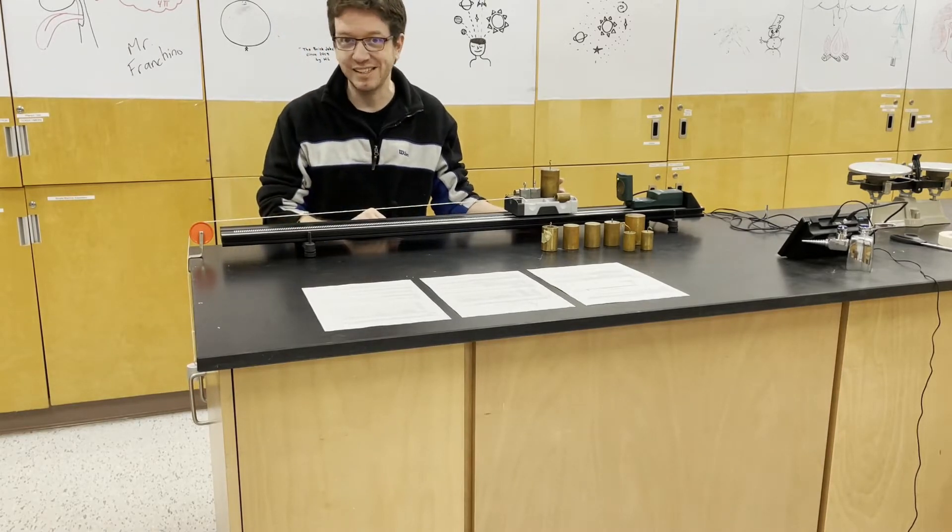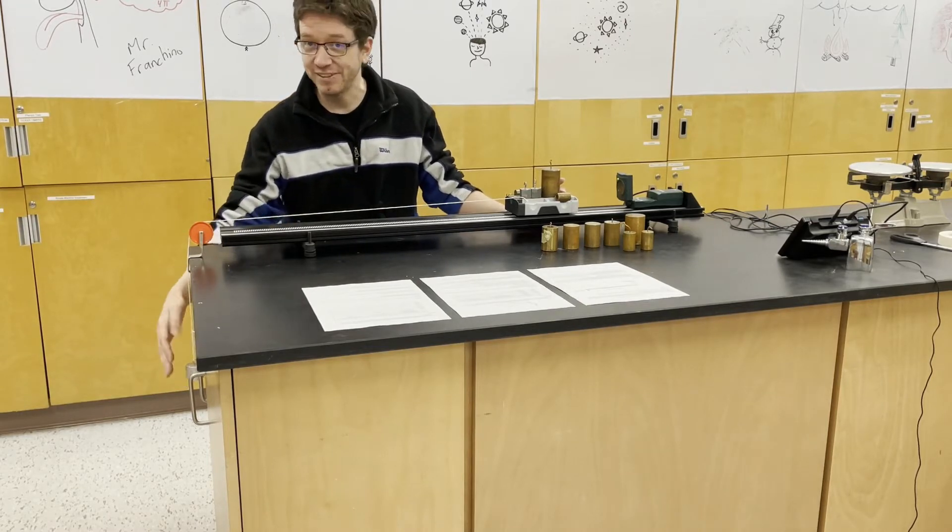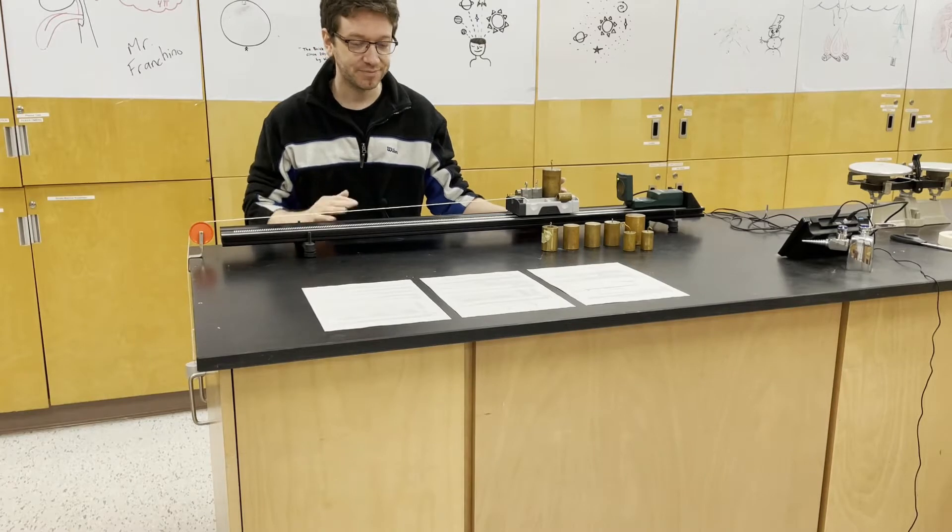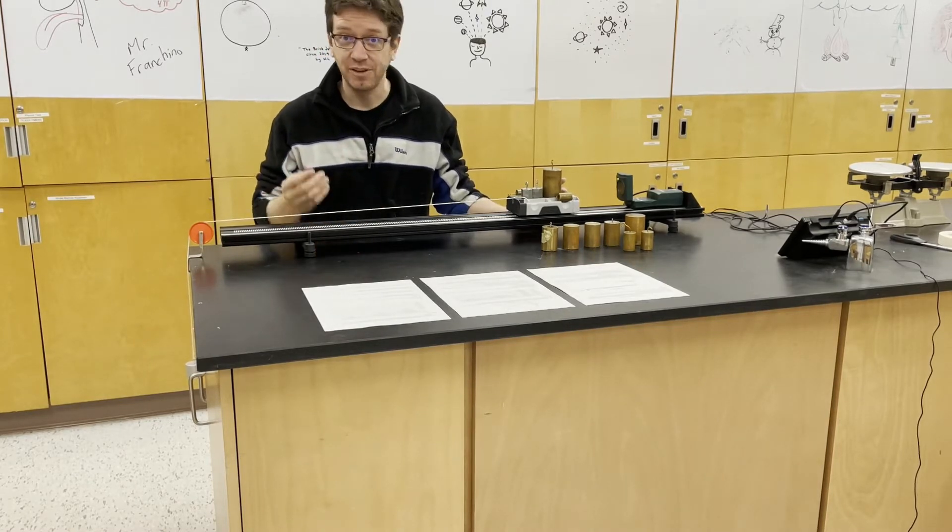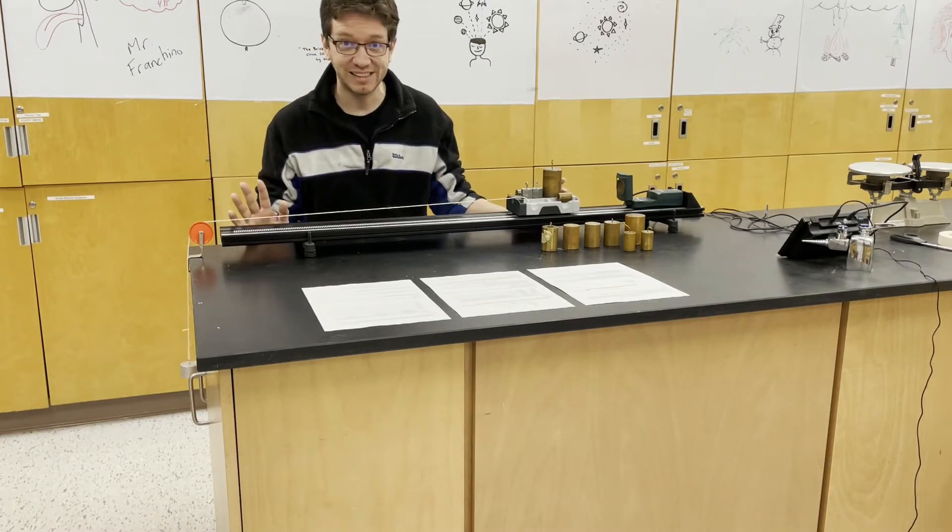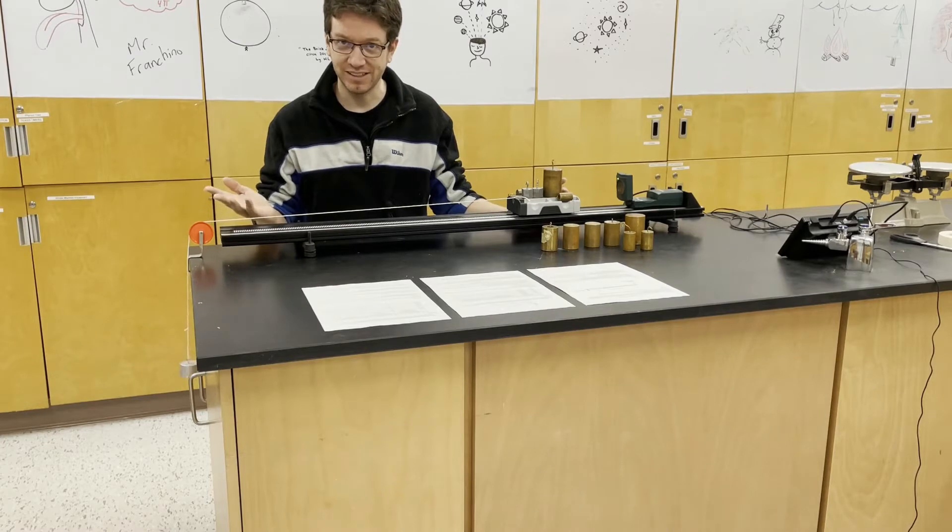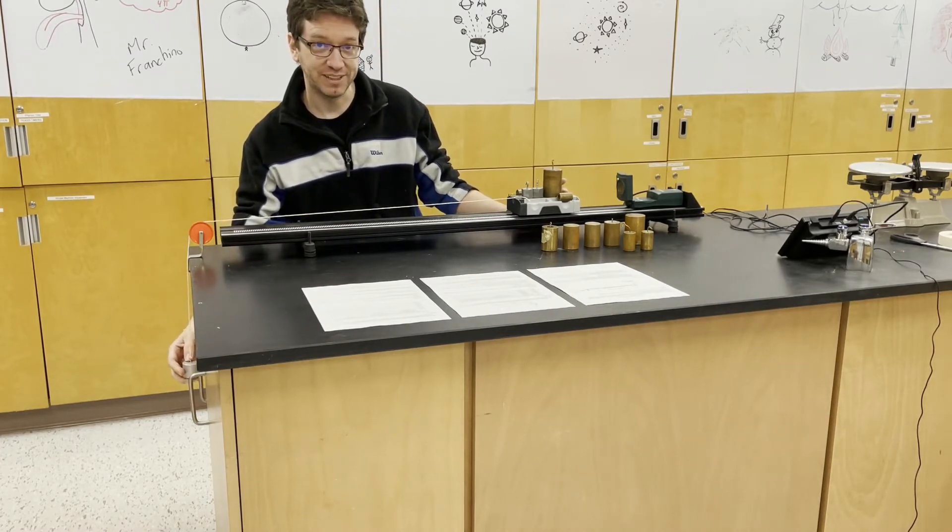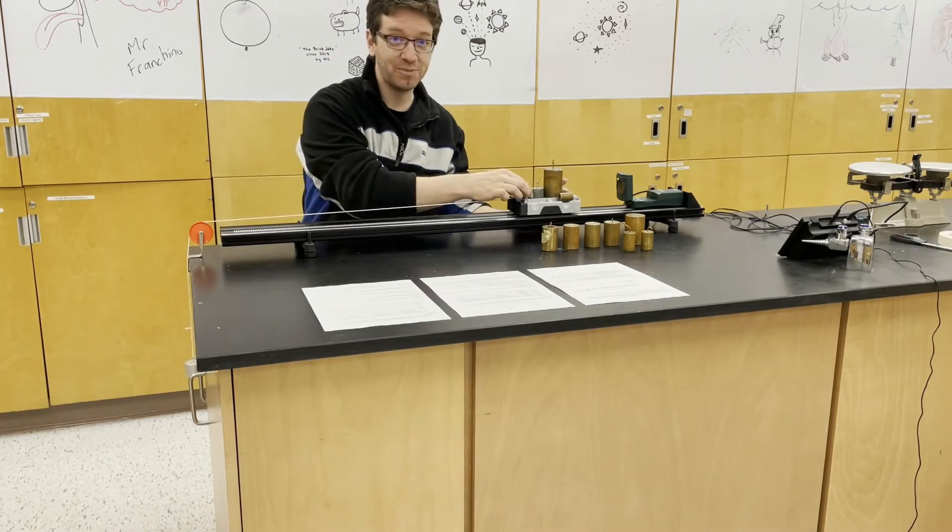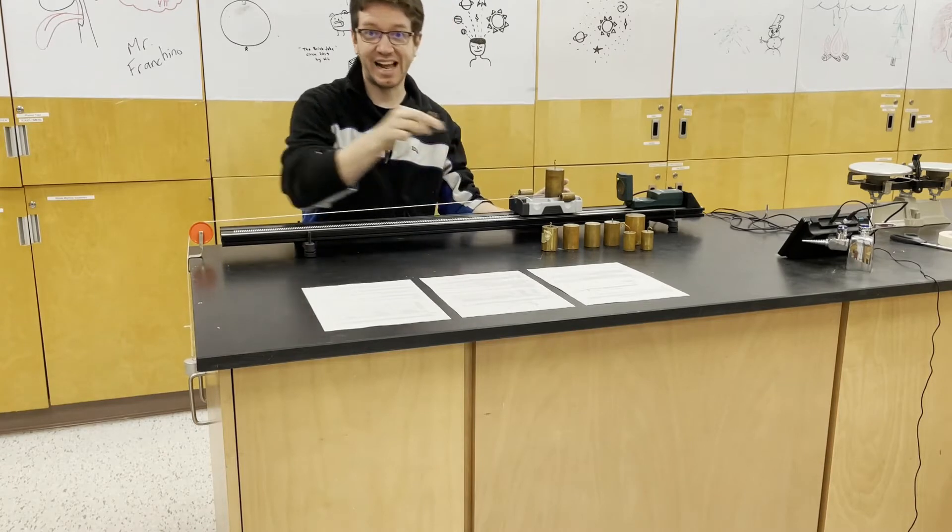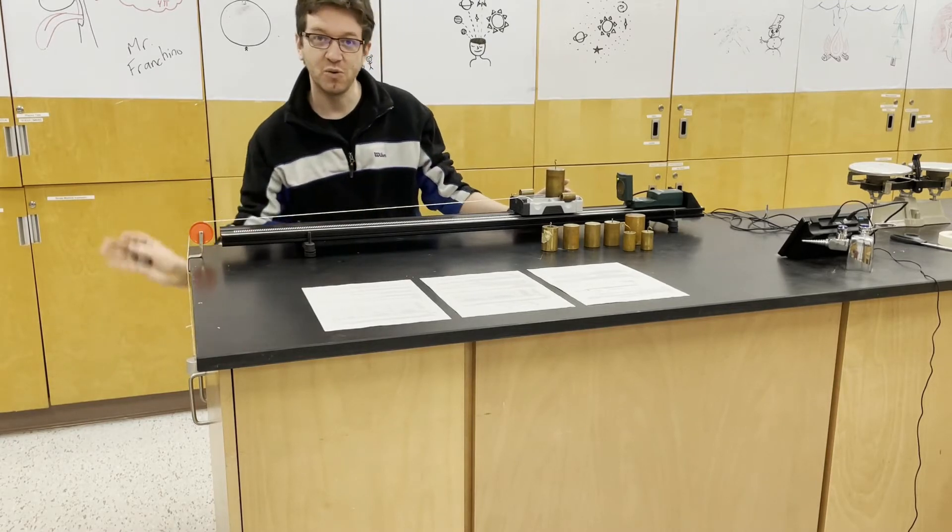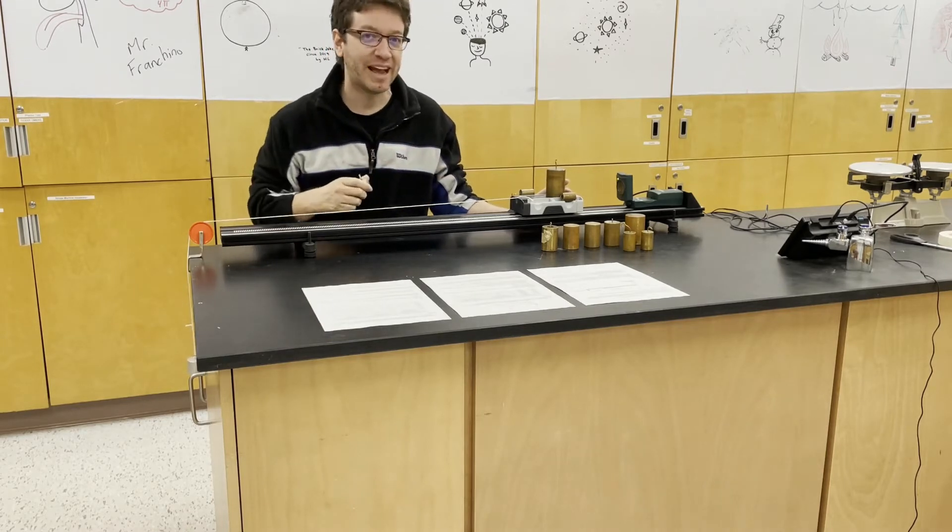Now the force that is causing that acceleration is the hanging mass. Gravity is acting on the hanging mass, and therefore the force of gravity on that hanging mass is causing all of the masses to accelerate. So what we're going to do to figure out how this net force, which is the force of gravity on the hanging mass, affects the acceleration of all the masses, is we're going to have to keep total mass constant as I change the force of gravity. So how I'm going to do that is when I add more masses to the hanging mass, I'm going to take them from the cart. So as I take them from the cart and add them to the hanging mass, I'm changing the net force. I'm increasing the force of gravity, but keeping the total mass of the system constant.